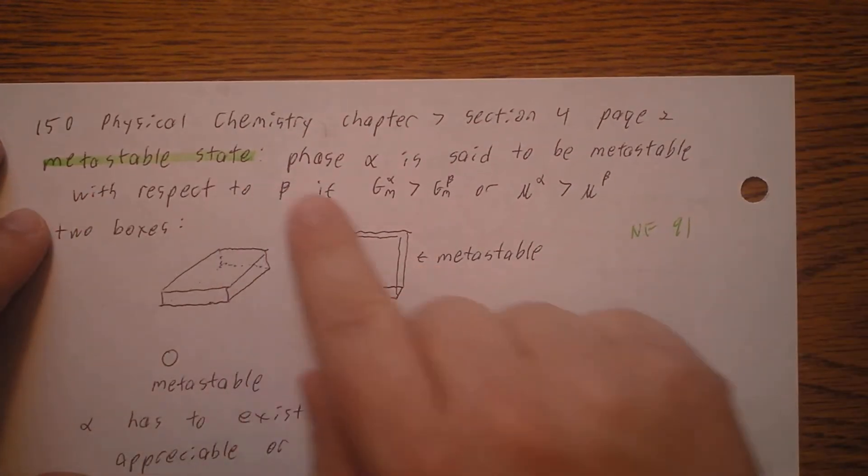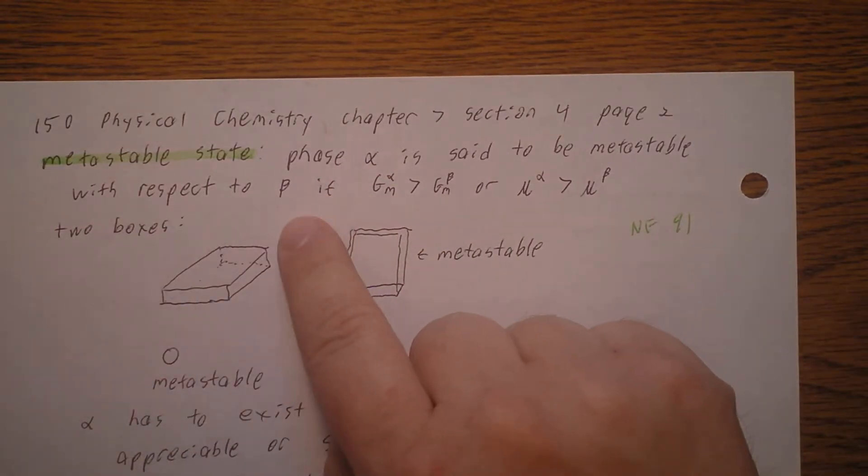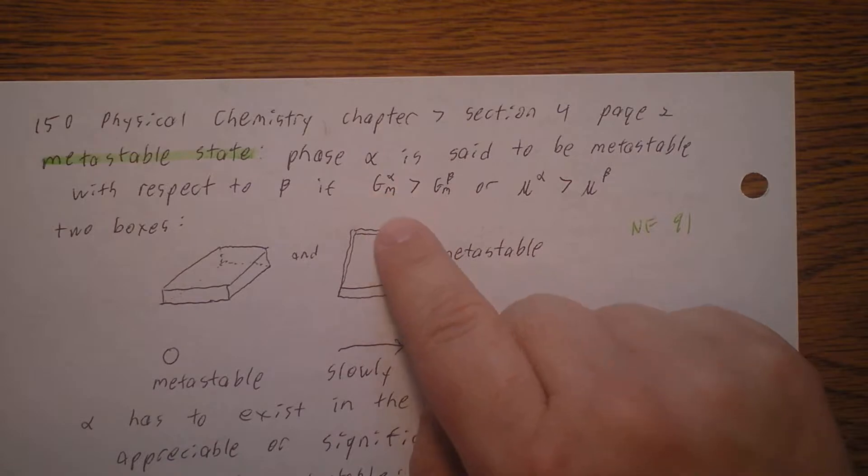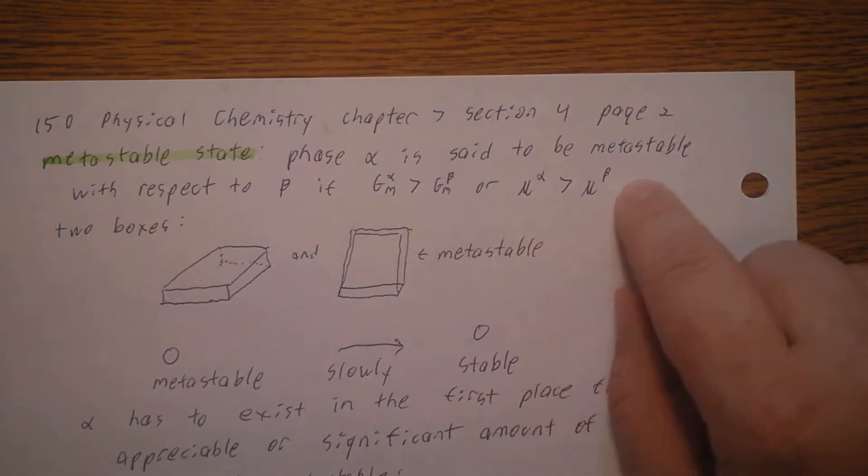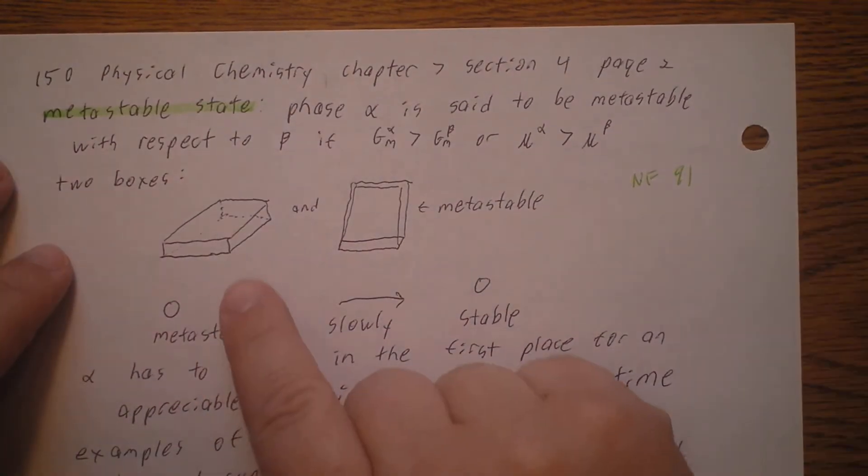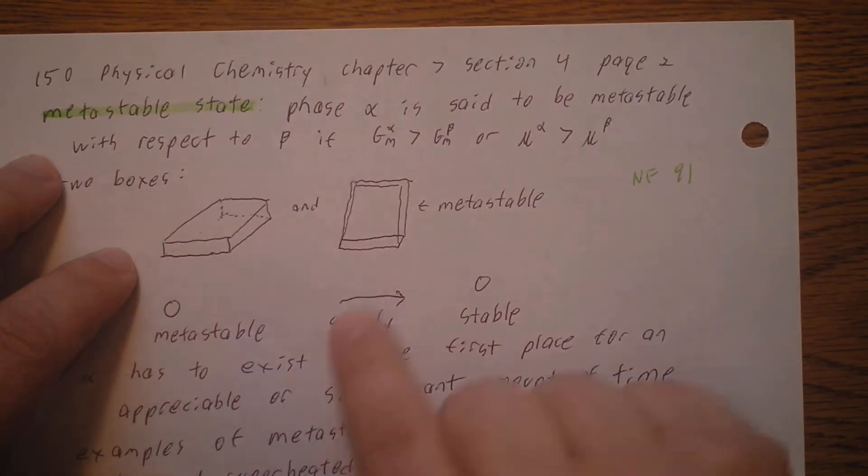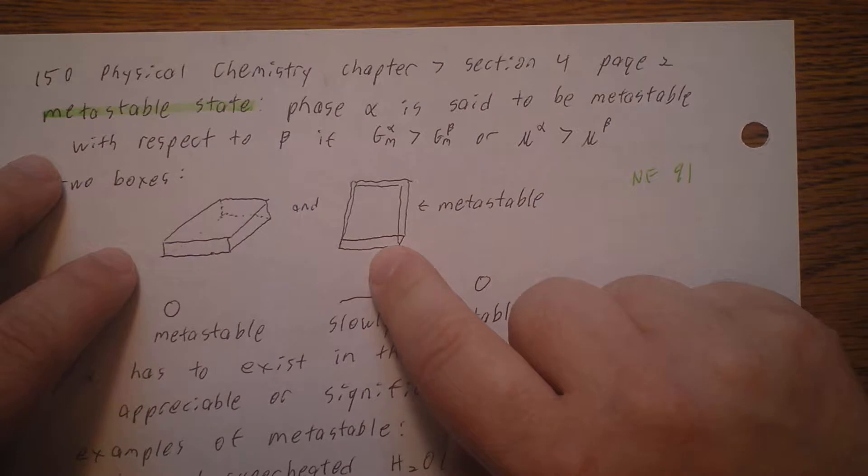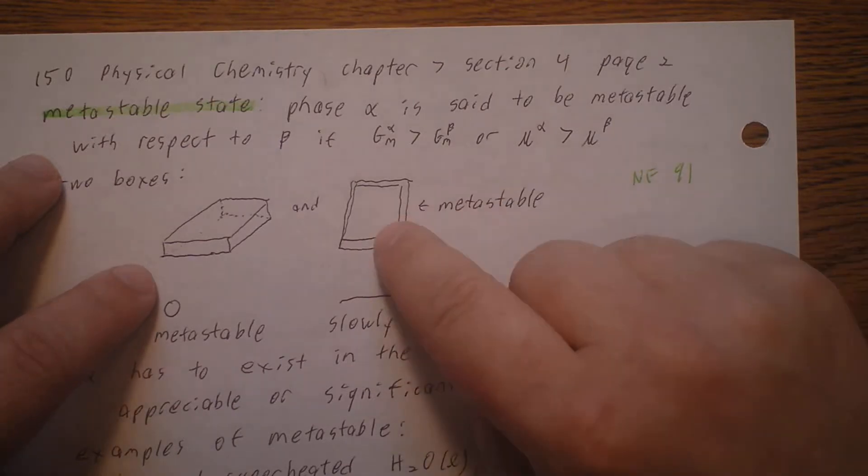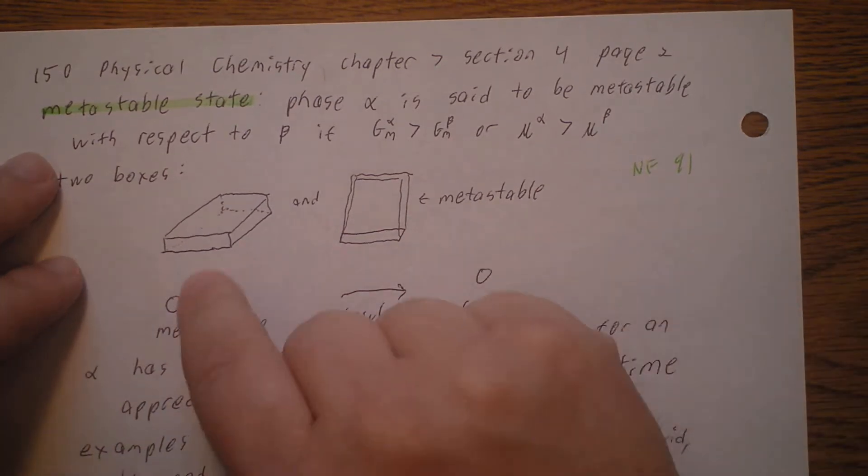Now, the metastable state. We say that phase alpha is metastable with respect to beta if the molar Gibbs energy in phase alpha is greater than in phase beta, or the chemical potential in alpha is greater than in beta. For example, let's say we have two identical boxes. One is laying with the big side down and one is up on its end. The one up on its end is not going to tip over on its own, but it's got higher potential energy. So we say that sticking up on its end is metastable relative to lying flat.